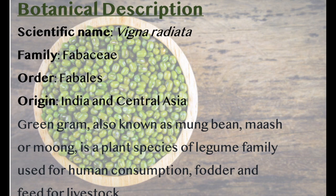Botanical Description: The scientific name of Green Gram is Vigna radiata. It belongs to the family Fabaceae and order Fabales. Its origin is from India and Central Asia. Green Gram is also known as Moong, and it belongs to the species of the legume family.